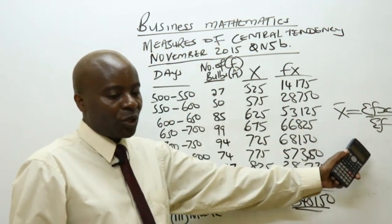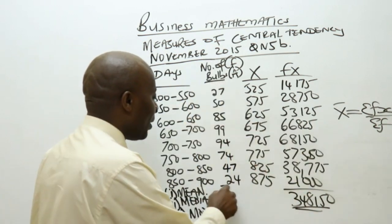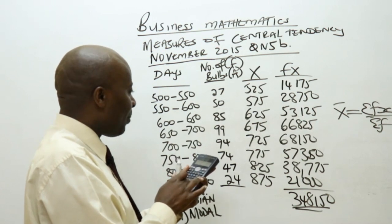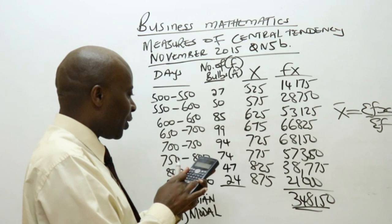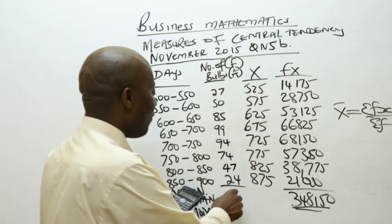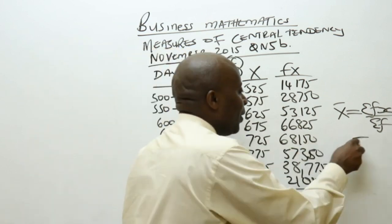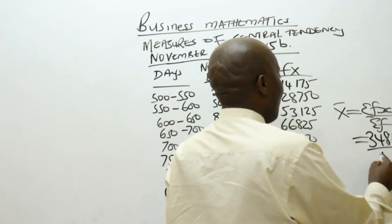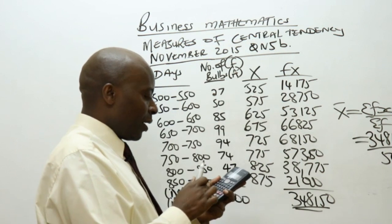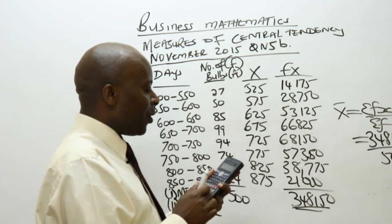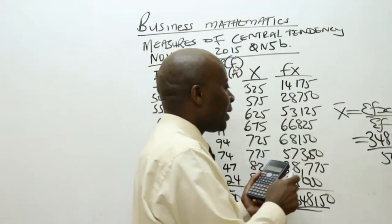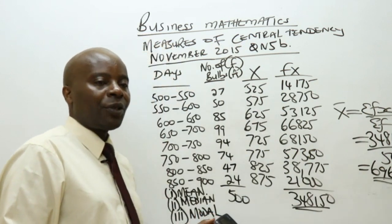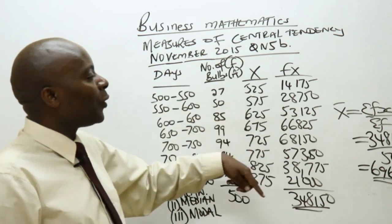The denominator is the summation of frequencies. Adding: 27 plus 50 plus 85 plus 99 plus 94 plus 74 plus 47 plus 24, which gives us 500. So the mean will be 348,150 divided by 500, which gives a mean score of 696.3. I've been able to use this question to demonstrate how the mean is computed.